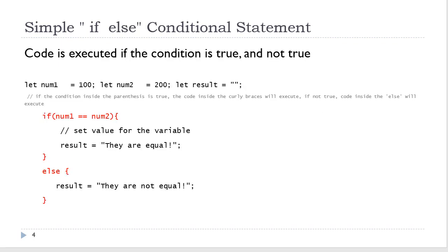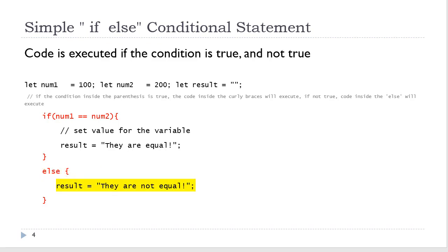We have also looked at a simple if-else conditional statement. If the condition inside the if is evaluated to be true, the code inside the curly braces will execute. Here we also have an else block. If the condition in the if evaluates to be false, the code inside the else block will execute. So in this case, code will be executed whether the condition is false or true.